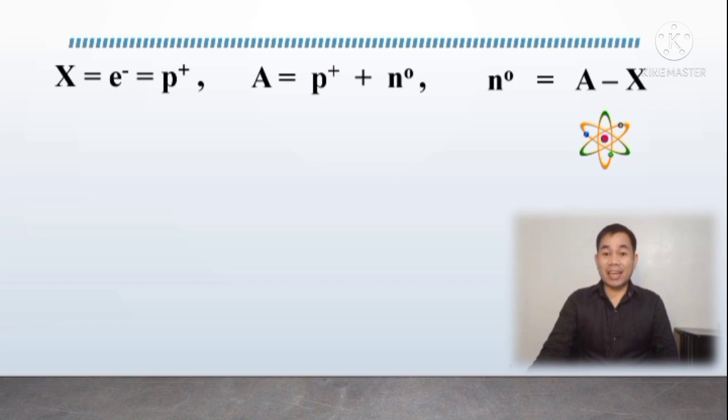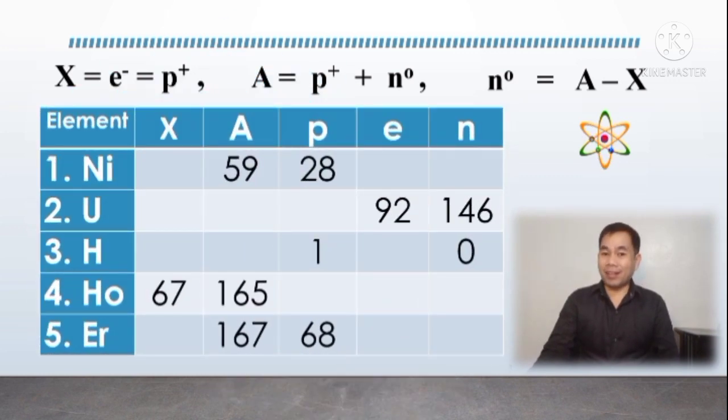Plus, on your screen is input data of element nickel. Let's start by completing the table by filling up the correct values required. Let's have item number one. The given atomic mass of nickel is 59 and nickel's proton is 28. What would be its atomic number? Applying the equation X = e = p, its atomic number must be 28, and its electron number must also be 28. How about its neutron? If you said 31, then your answer is definitely correct. Very good. 31 is the correct neutron number since it's obtained from subtracting the values of a and X with 59 and 28 respectively.